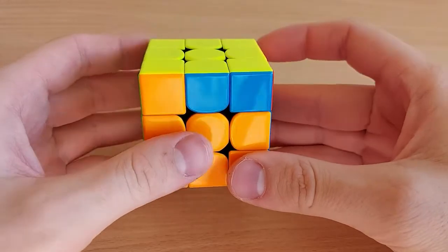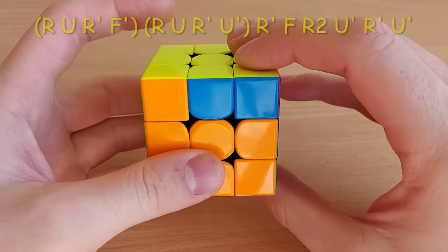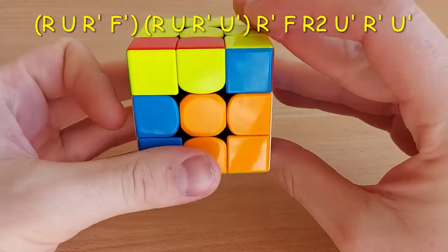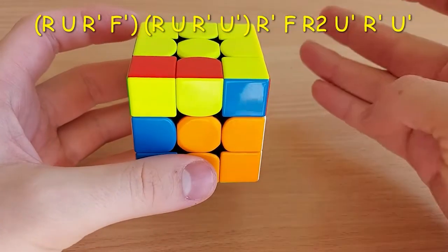So from this angle, you do those last four moves, which is R, U, R prime, F prime, and then the first part of the T perm.